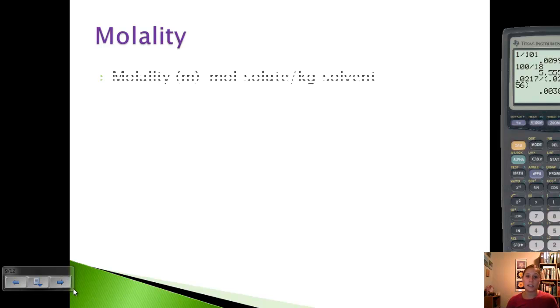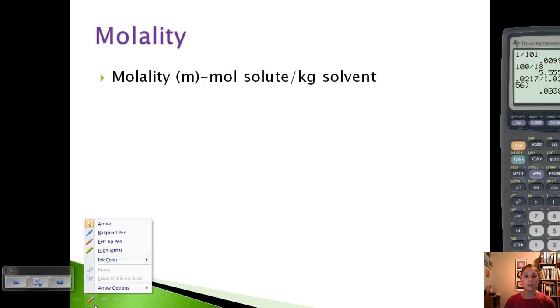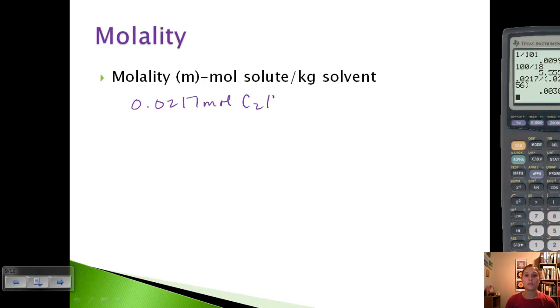The last one we're going to look at is molality. This one may be a little new. It's a small m instead of the big M for molarity, so they're easy to get confused. It's moles of solute over kilograms of solvent.